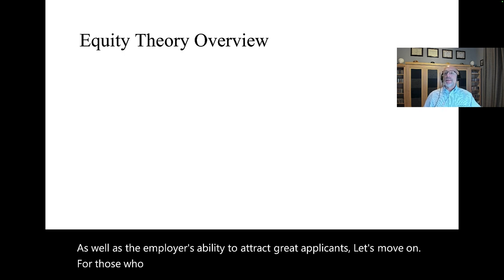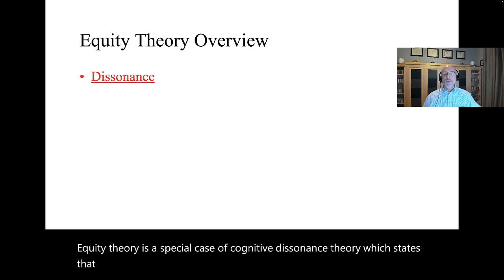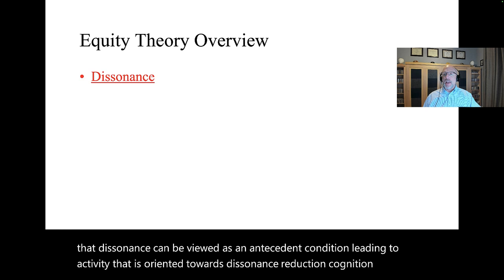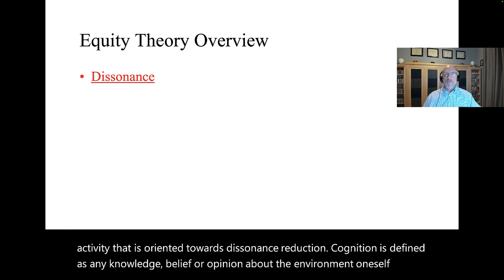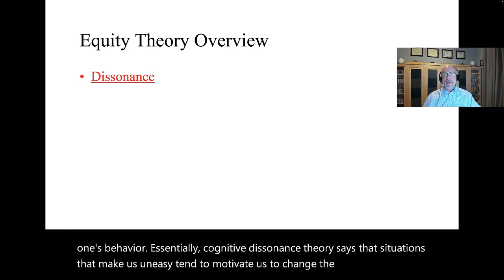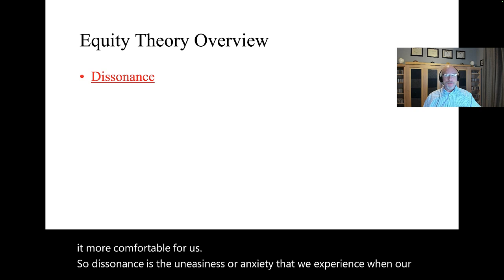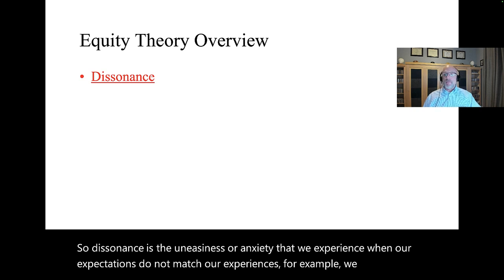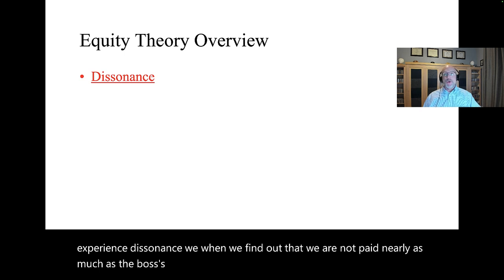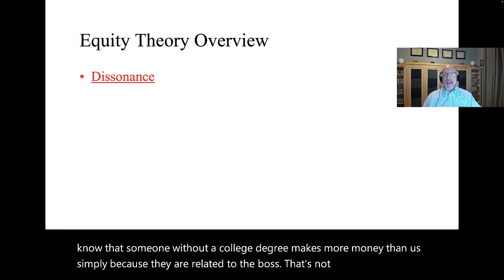For those who view compensation through the lens of fairness, we can use equity theory. Equity theory is a special case of cognitive dissonance theory, which states that dissonance can be viewed as an antecedent condition leading to activity oriented towards dissonance reduction. Essentially, cognitive dissonance theory says that situations that make us uneasy tend to motivate us to change them. Dissonance is the uneasiness or anxiety we experience when our expectations do not match our experiences — for example, when we find out we are not paid nearly as much as the boss's nephew in the cubicle next to us. We perceive it as inequity.